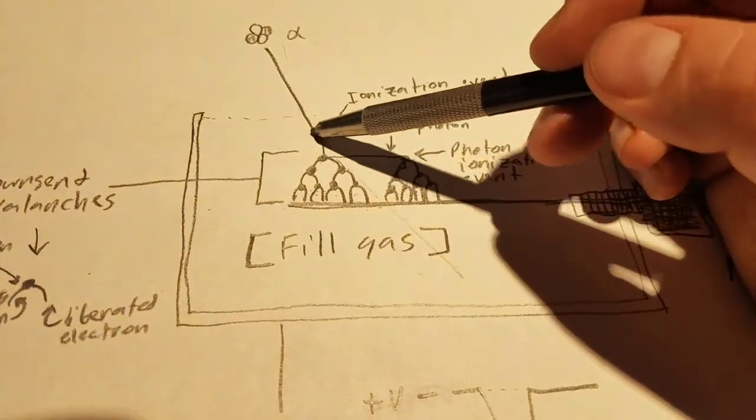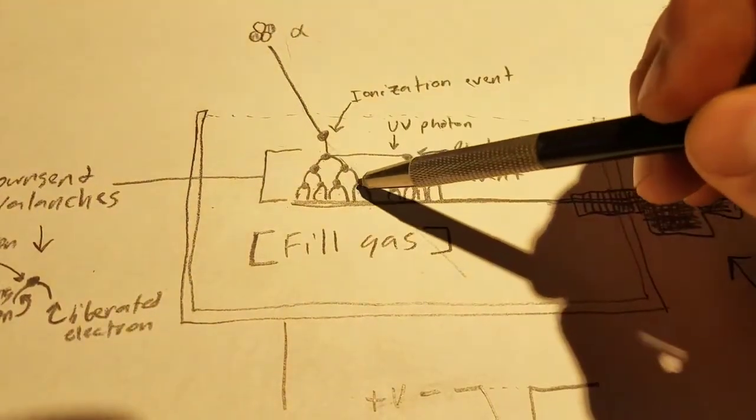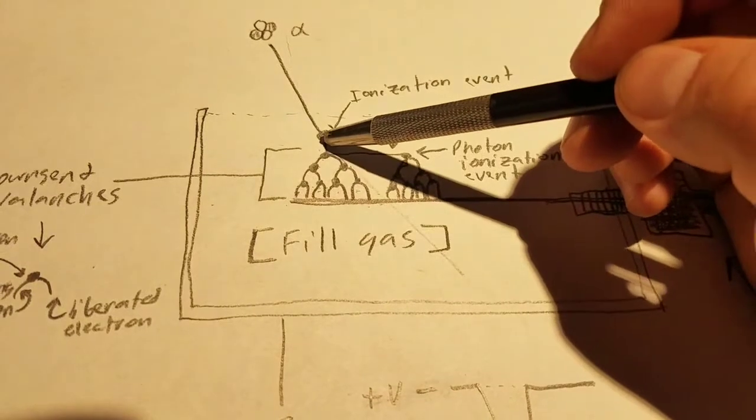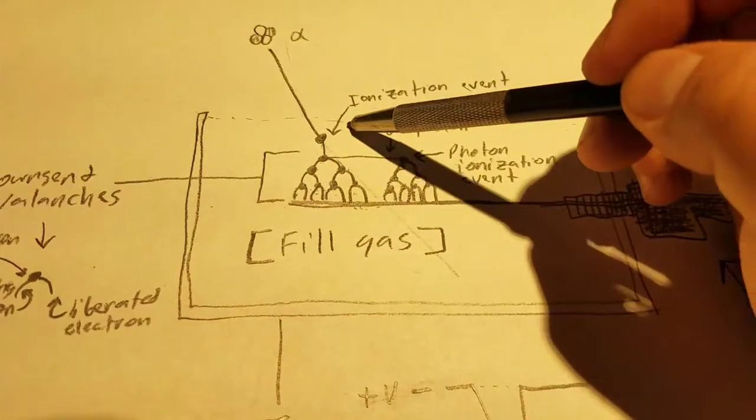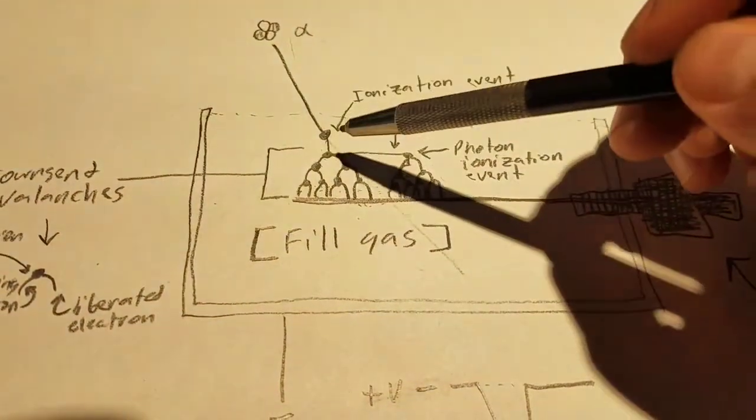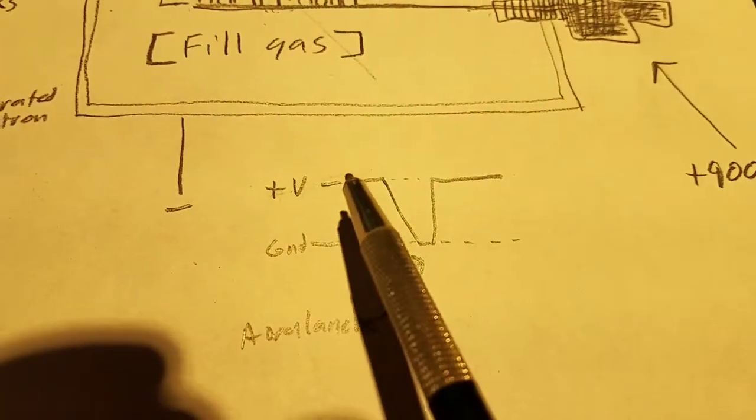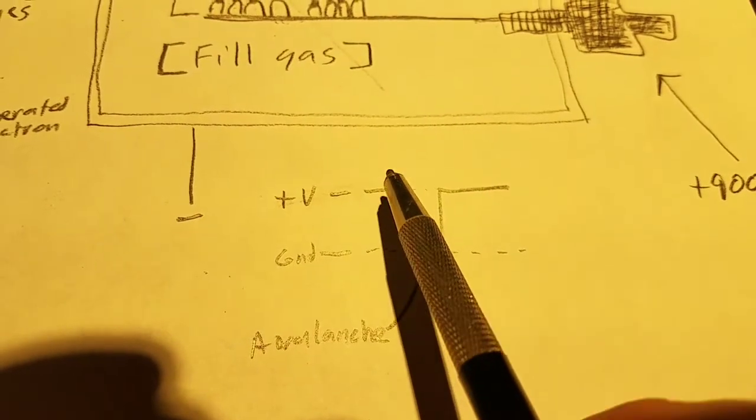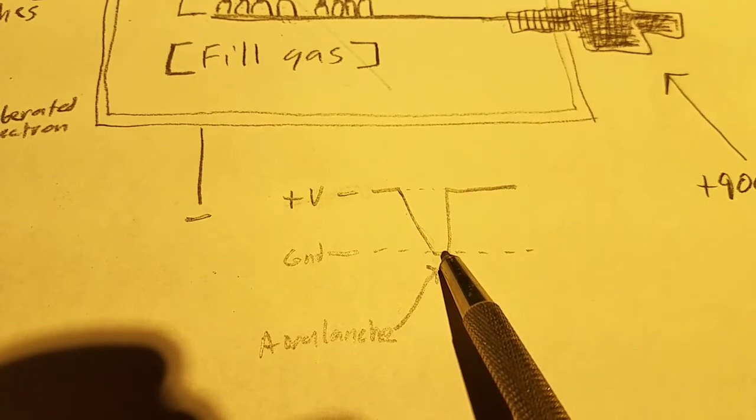This is called a Townsend avalanche, and this is how Geiger counters detect radioactive particles. This creates a lightning bolt which creates a short or a zero potential between the casing and the anode. If you plot it out, you'll suddenly see as the avalanche occurs it'll actually go to ground because there's a dead short, like a little lightning bolt cutting through there.